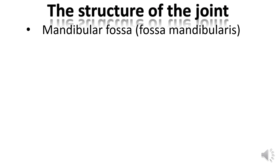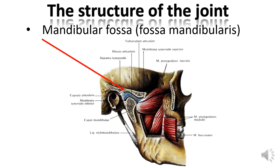The mandibular fossa of the temporal bone, fossa mandibularis. In front, it is limited by the articular tubercle. In the back, it passes along the front edge of the petrotympanic fissure of the temporal bone. Laterally, it is limited by the zygomatic process. The petrotympanic fissure divides the fossa into two approximately equal parts, the anterior intracapsular and the posterior extracapsular. The front of the fossa is represented by dense bone tissue covered with cartilage. The back is a thin bone that separates the articular fossa from the middle and inner ear.